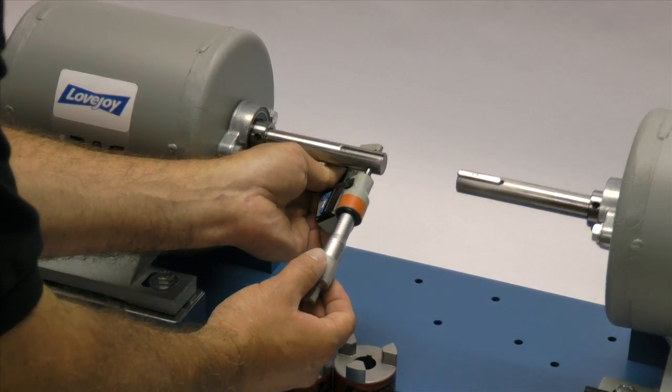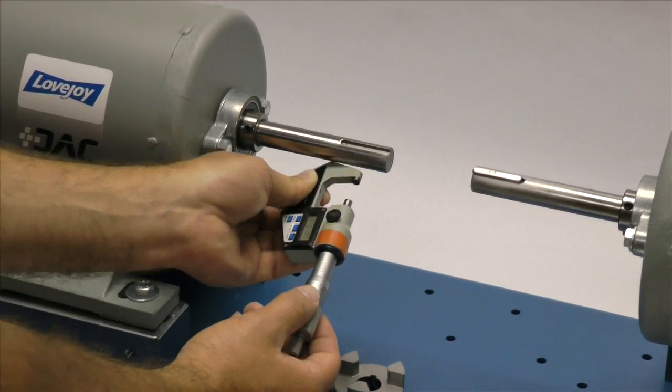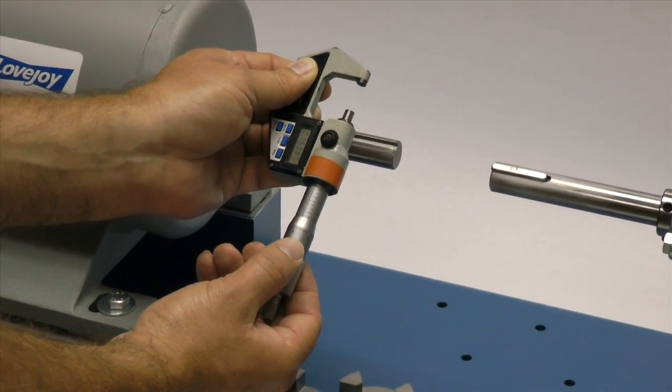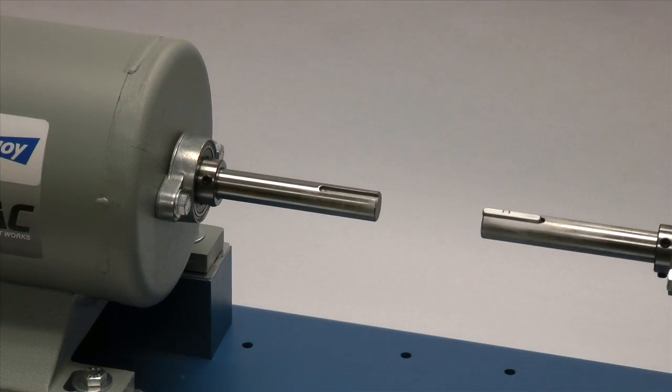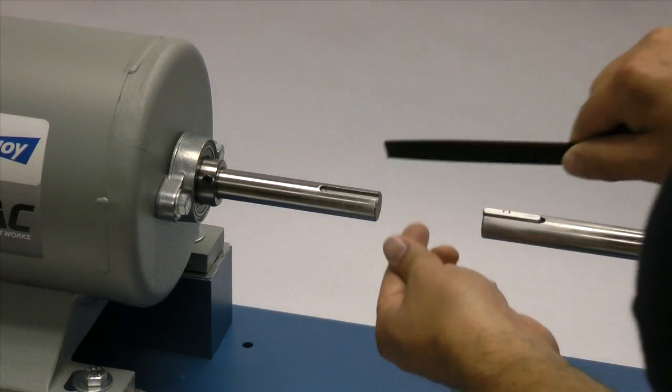If not done already, you should measure the shaft and ensure that the shaft diameter matches the coupling bore size. Then inspect the shaft and clean up any nicks or burrs from the keyway or shaft diameter.